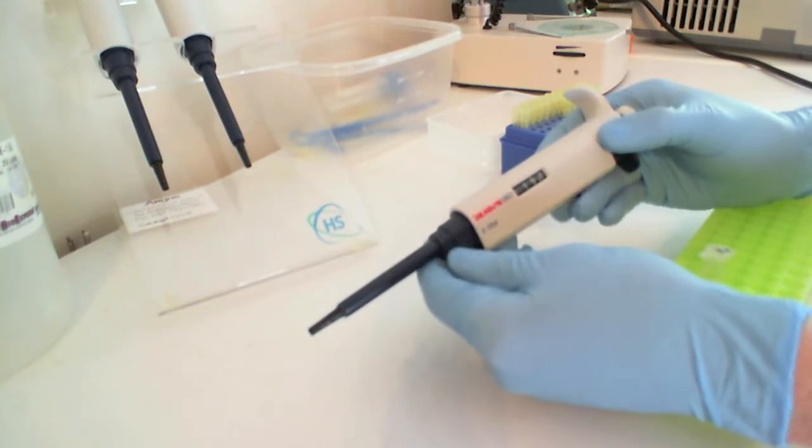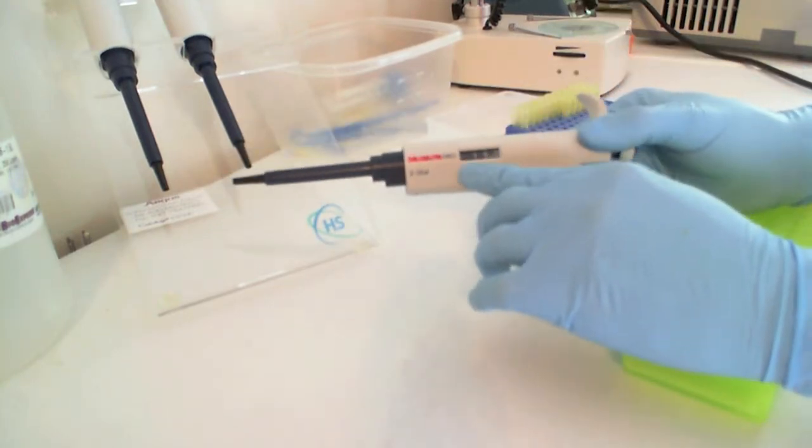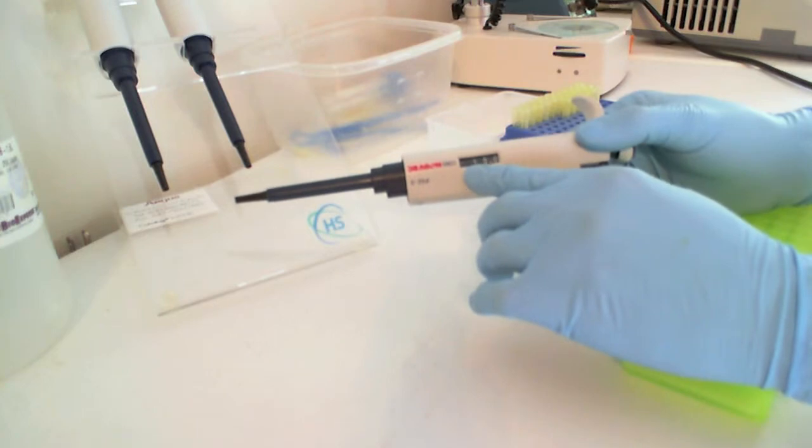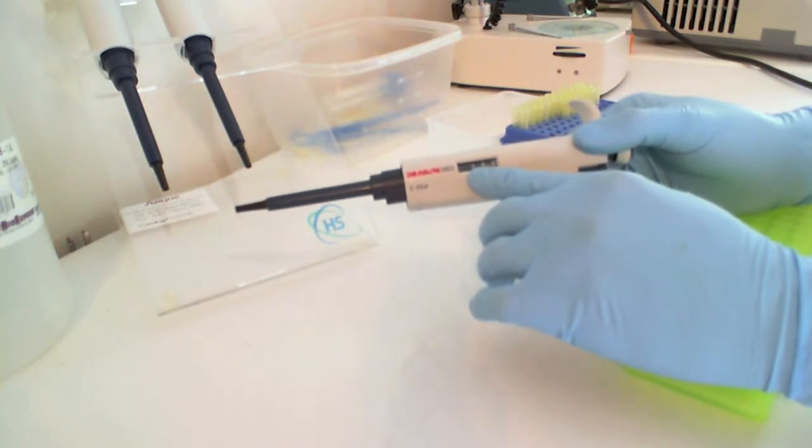Air displacement pipettes move liquids from place to place in pipette tips. They have numbers written here so you can see how much liquid you're going to be moving from place to place.